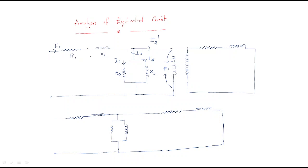The complete current I1 divides as I-naught and I2-dash. After that, the EMF induced in the primary winding enters into the secondary winding as E2. The secondary winding resistance is R2/s and the reactance is X2-naught. So we have R2/s and sX2-naught — meaning the motor is running with the slip speed.